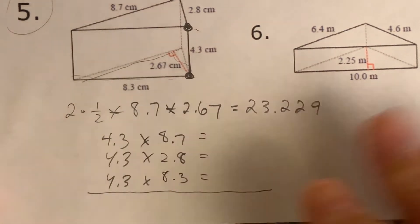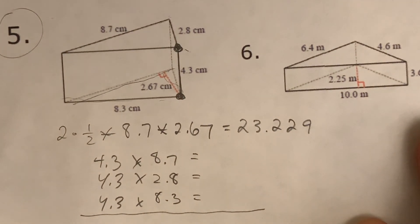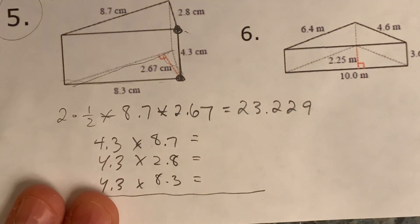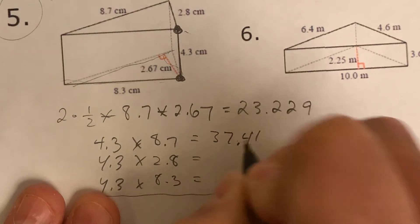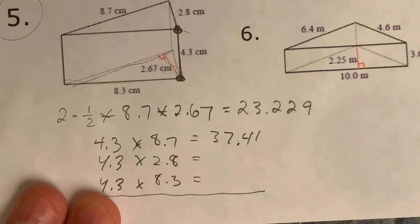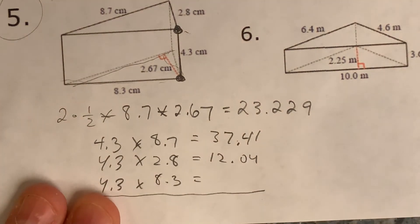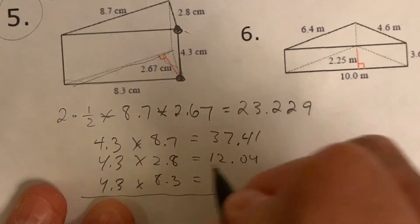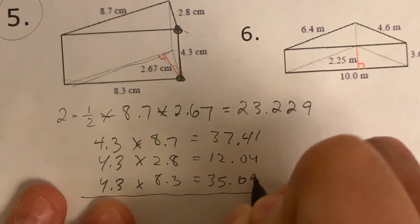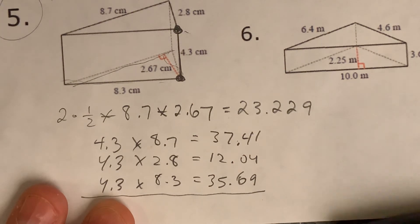And again, I'm strongly suggesting that you work these out with me in this video because it is going to be very hard to understand this if you don't. This is very new and it's got a lot of steps to it. 4.3 times 8.7 is the first one, I get 37.41. Again, you should double check that. 4.3 times 2.8 is 12.04. And then 4.3 times 8.3 is 35.69.